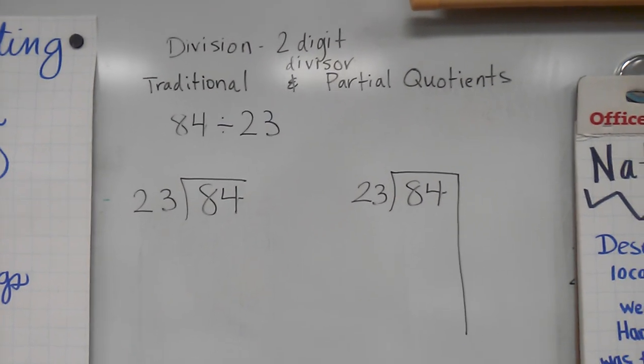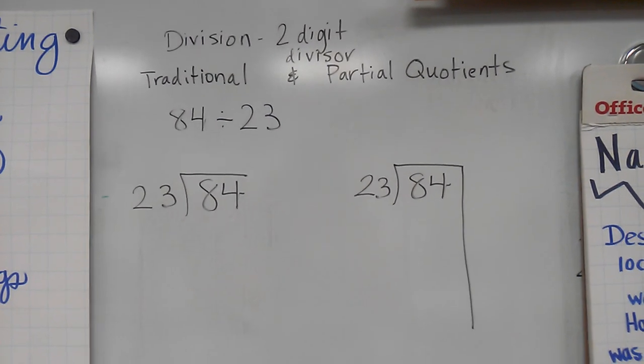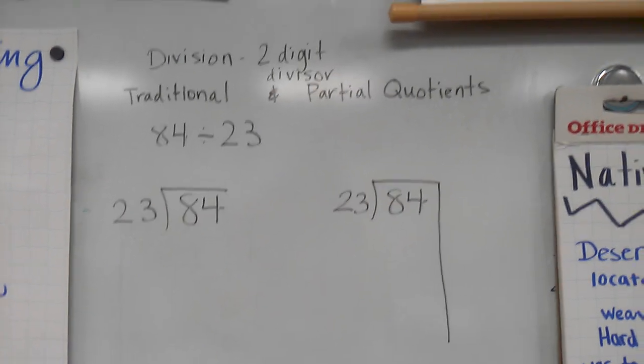Division with two-digit divisors using traditional and partial quotients. The problem is 84 divided by 23.